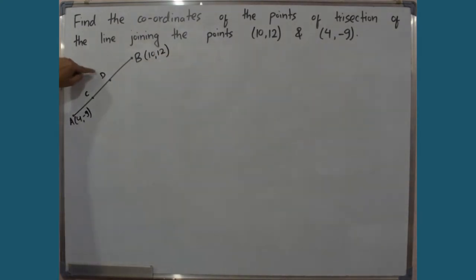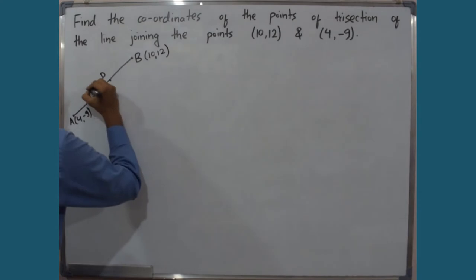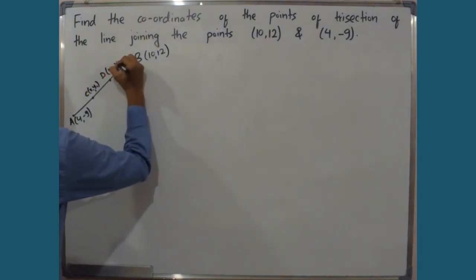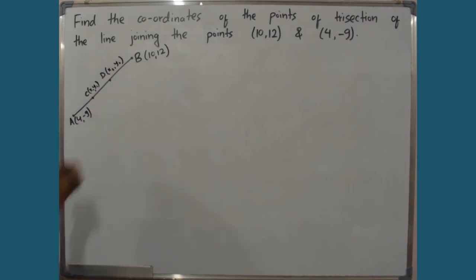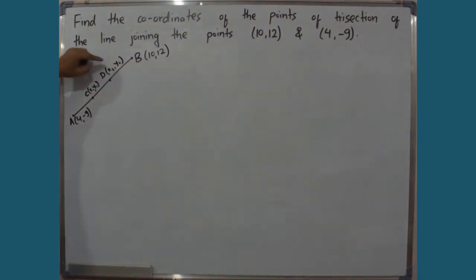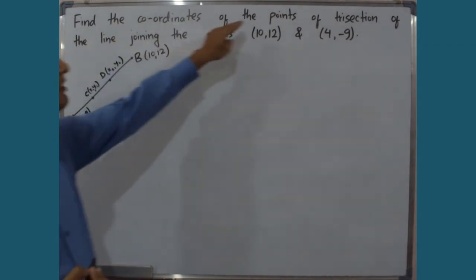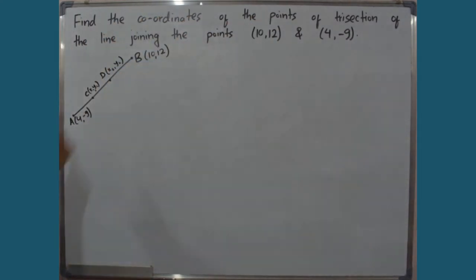The C coordinate is (X1, Y1) and the D coordinate is (X2, Y2). Now, find the coordinates of the points of trisection — these are the points of trisection.